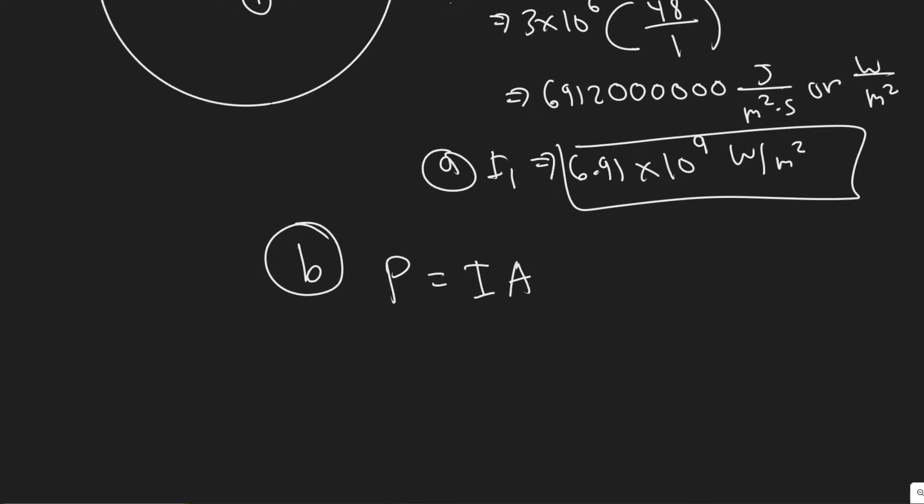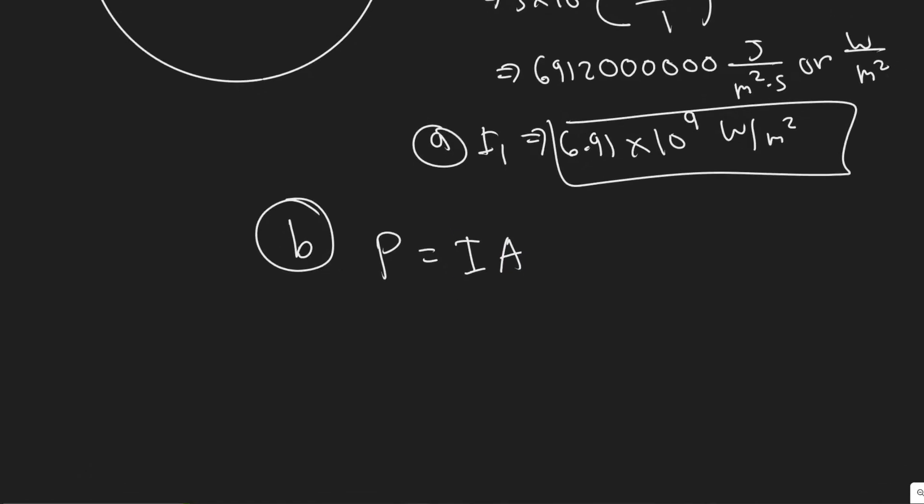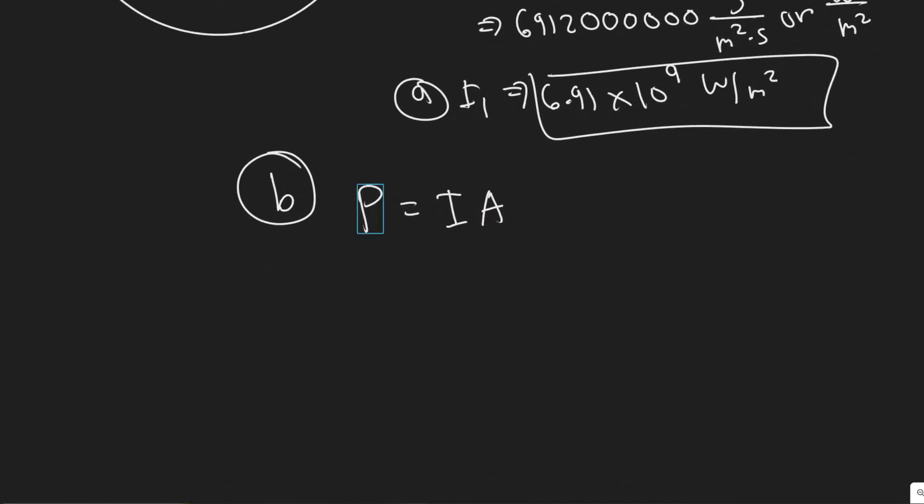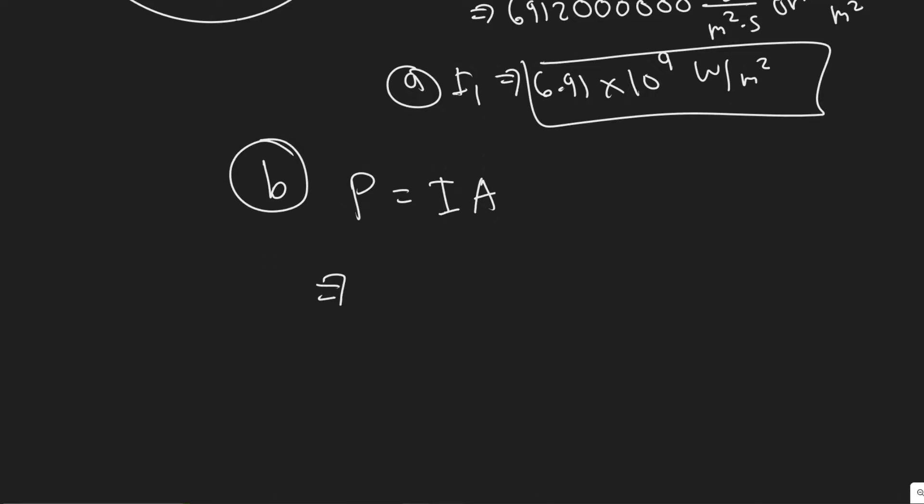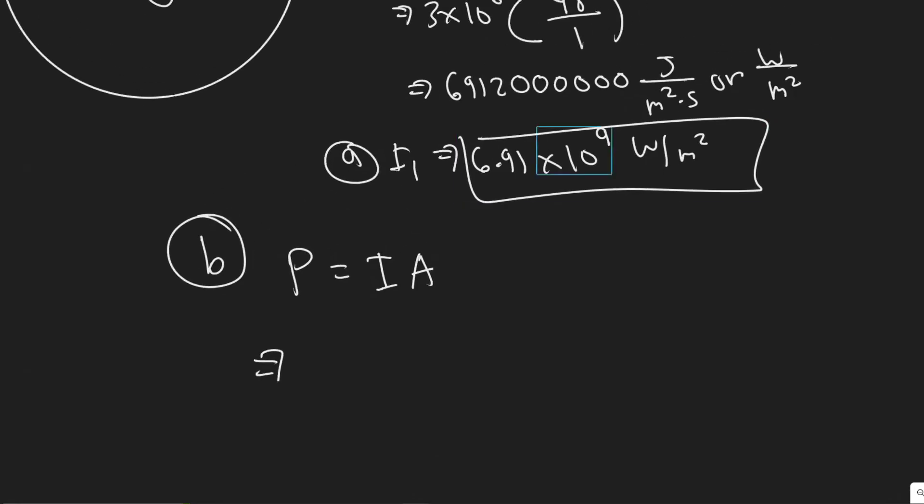So what the area passes through, we can just get the rate. So we know the intensity, they're saying at 1 kilometer, which is what we just solved for. So we know the intensity here is 6.91 times 10 to the 9.